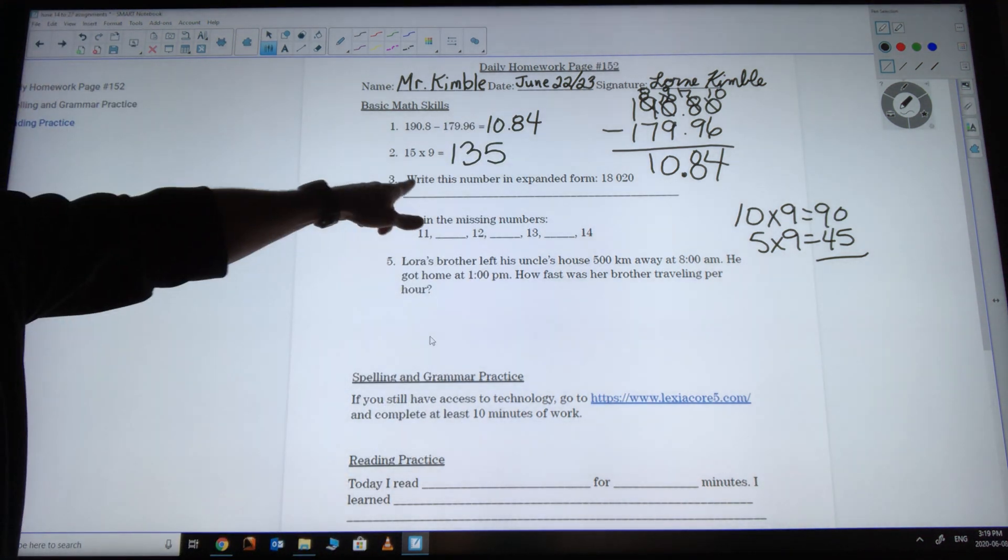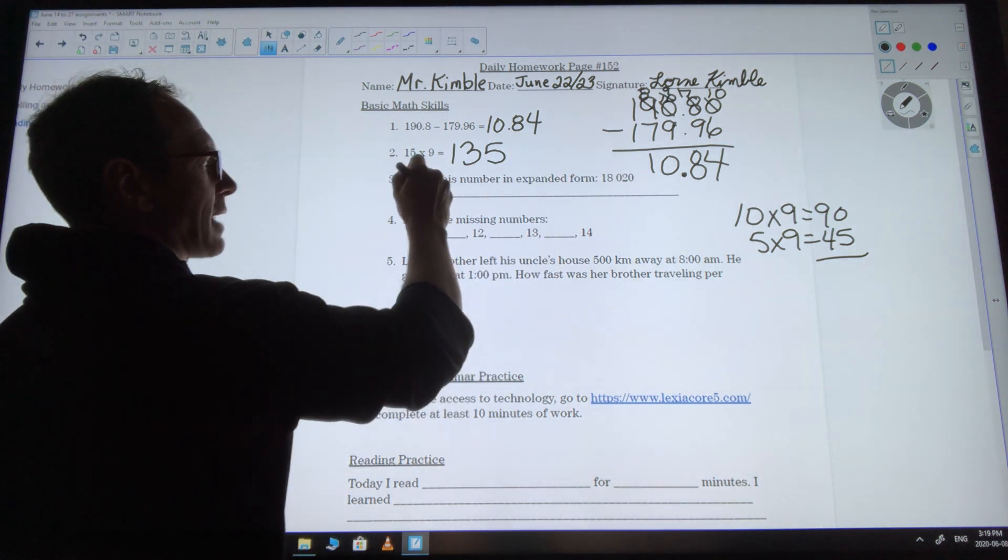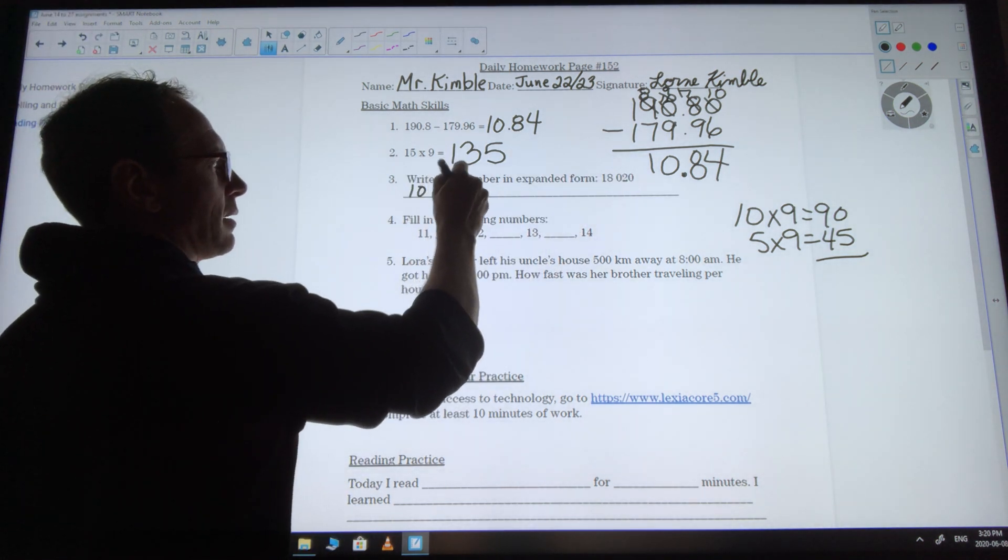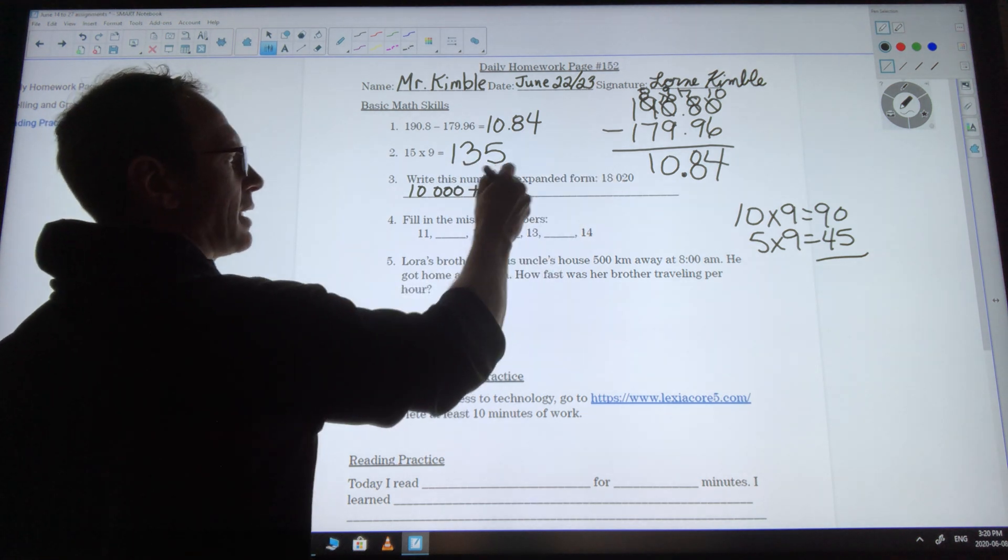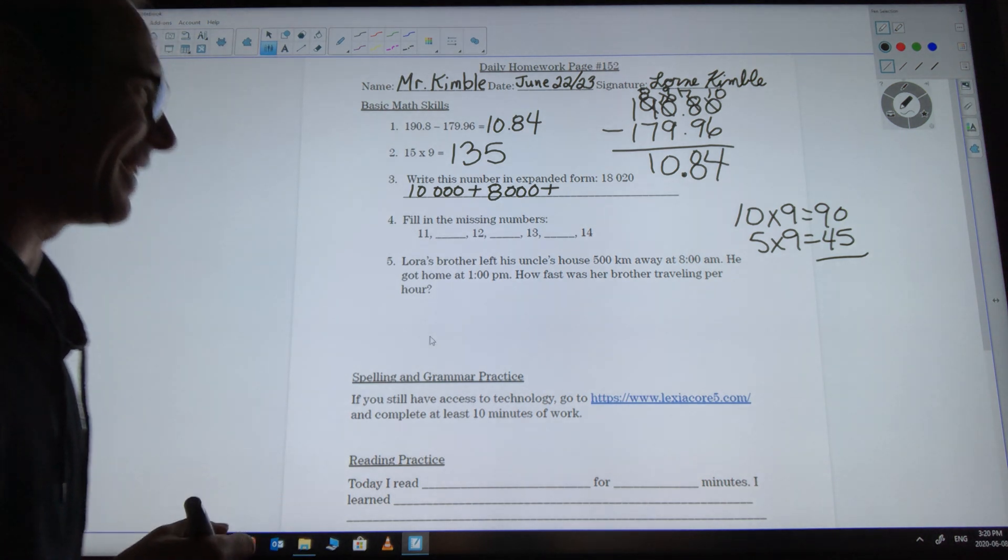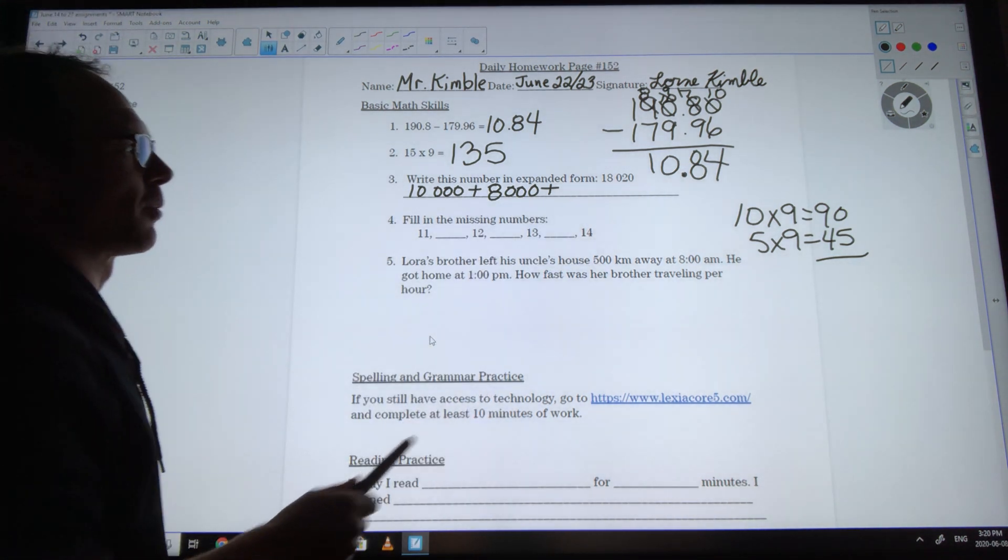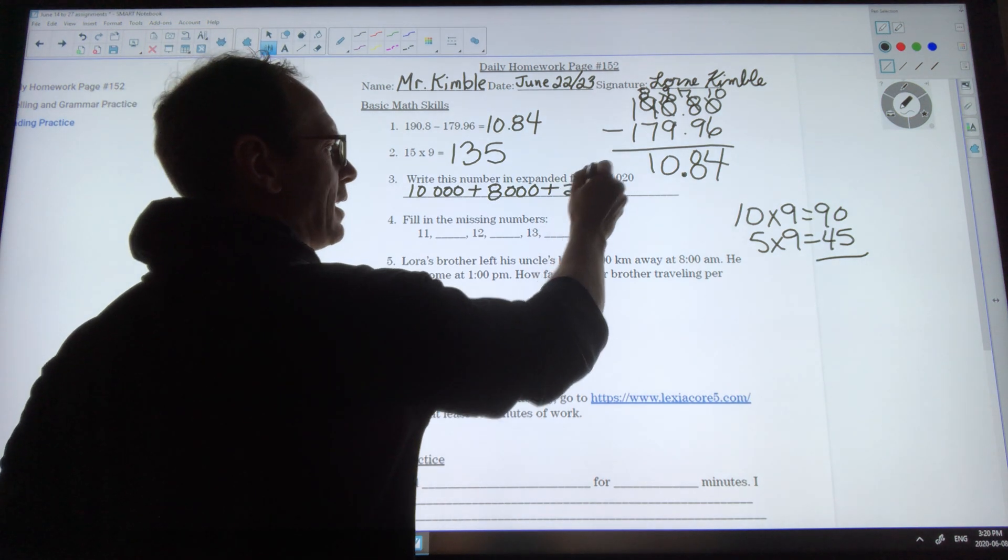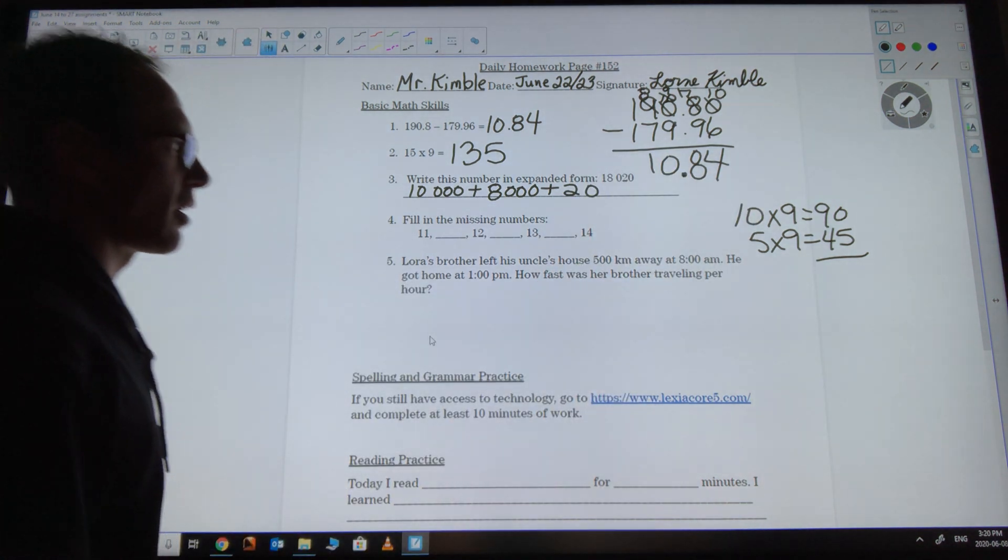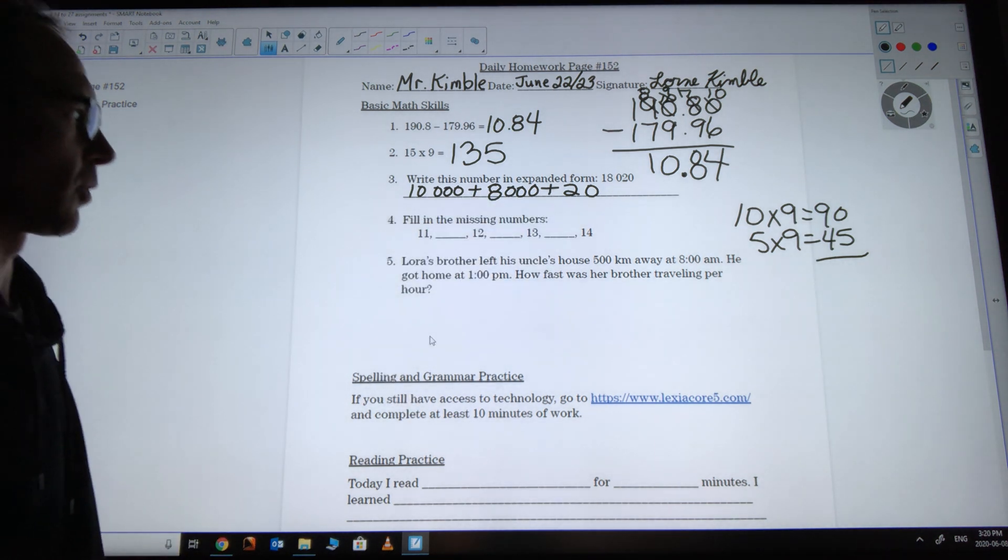I need to know the expanded form of 18,020. So the 1 here is 10,000. The 8 is 8,000. There's the bell. The zero doesn't make any difference so we're not going to worry about that. The 2 is 20 and the last zero also doesn't make a difference. So 10,000 plus 8,000 plus 20 would be our expanded form.